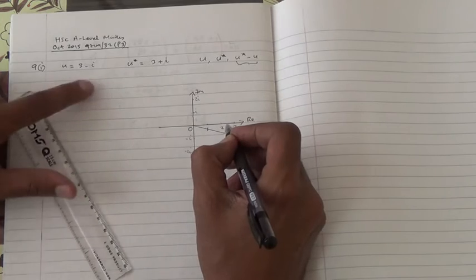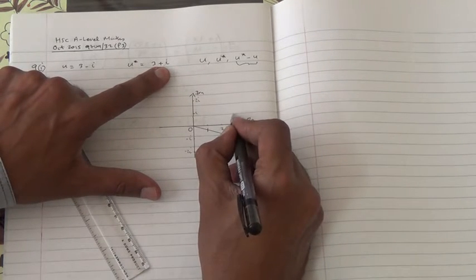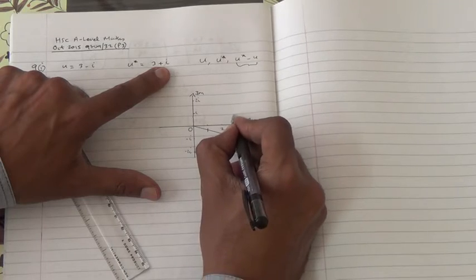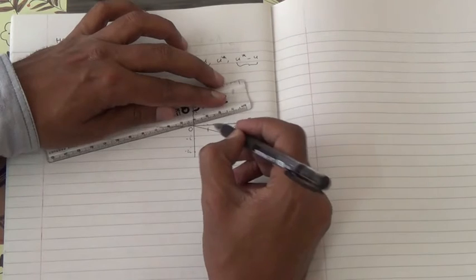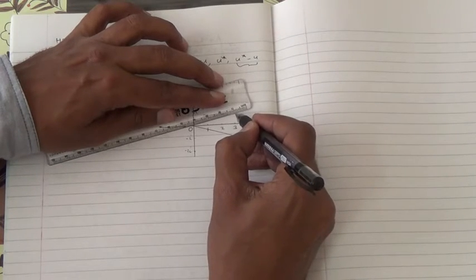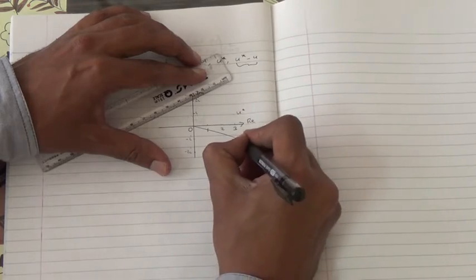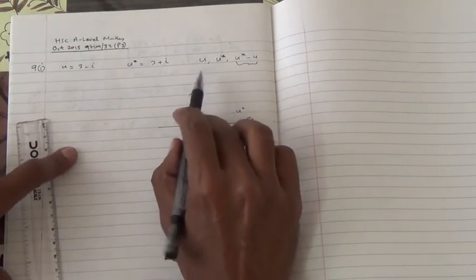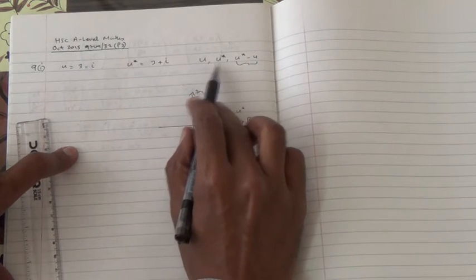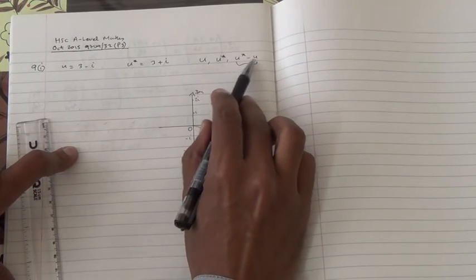Then we have three plus i, somewhere here. Okay, that's the second point. Maybe we could also draw a line here, but I'm going to state it as u star, and this is u. Then, for the third one, we have to look at this carefully here. We have u, u star, u star minus u.